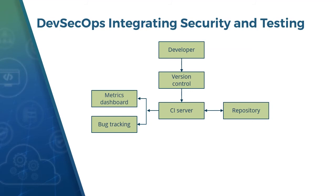The metrics dashboard and bug tracking are tools used to identify all vulnerabilities from a security architecture perspective and keep a bug tracking system in place, identifying the right metrics that need to be gathered from all the activities that are going on.